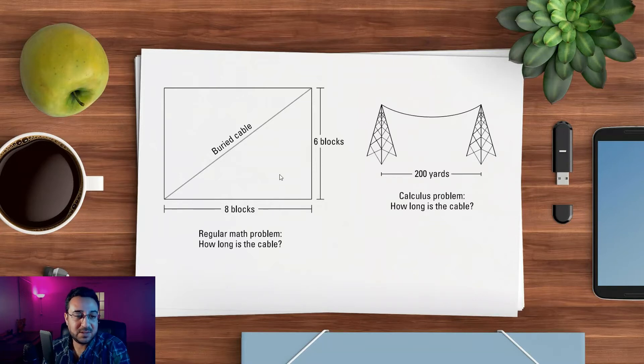If the problem is based on old mathematics, like the left side box, you have a length of six on the y-axis, length of eight on the x-axis. You want to know the cable length, so you use the Pythagorean theorem and can easily find that.